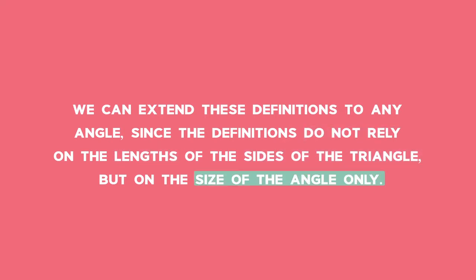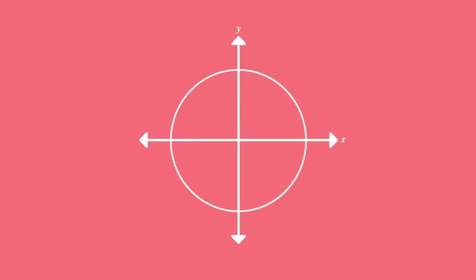If we were to draw a circle centered on the origin O, and passing through point P (x, y), then the length from the origin to point P is the radius of the circle, which we denote R.